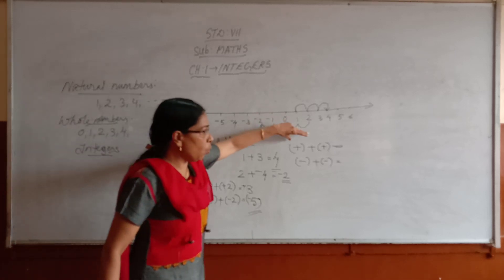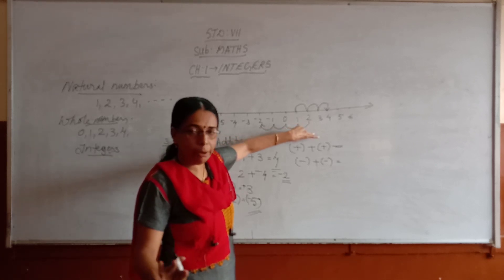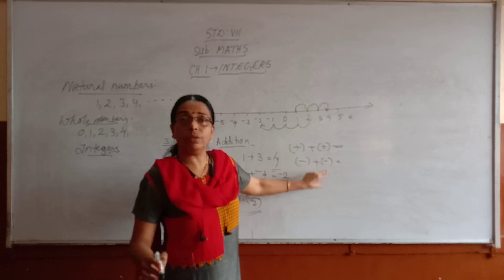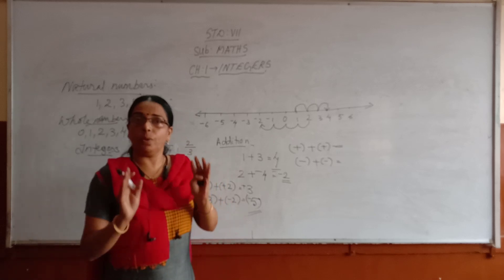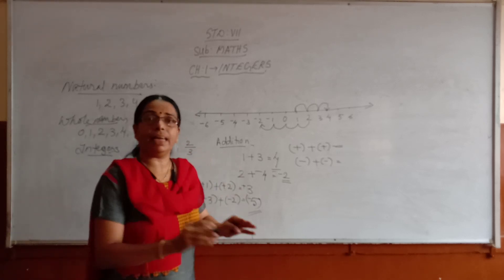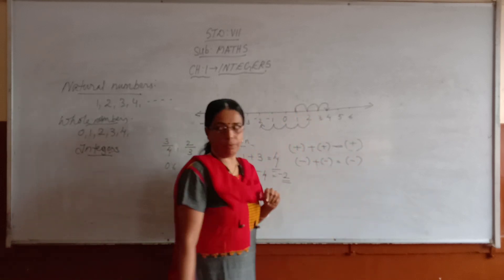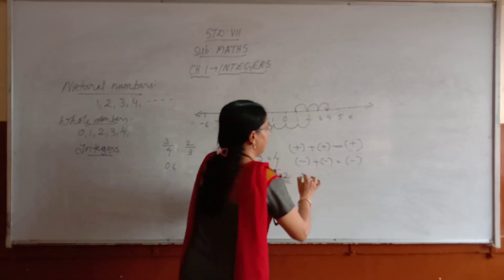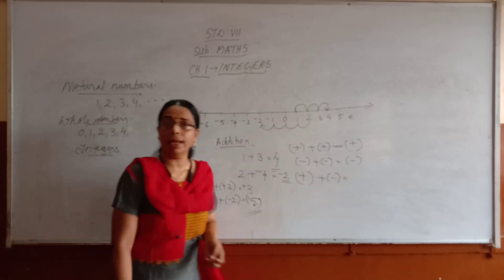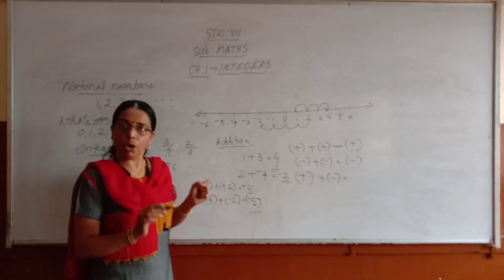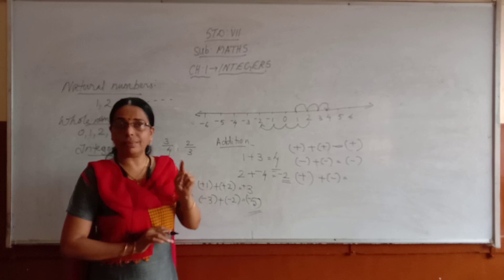That means if both the integers are positive, the sum will also be positive. If both the integers are negative, the sum will also be negative. When adding 2 integers with the same sign, add the numbers and give the common sign. If one integer is positive and the other is negative, subtract the smaller from the bigger number and give the sign of the bigger number.